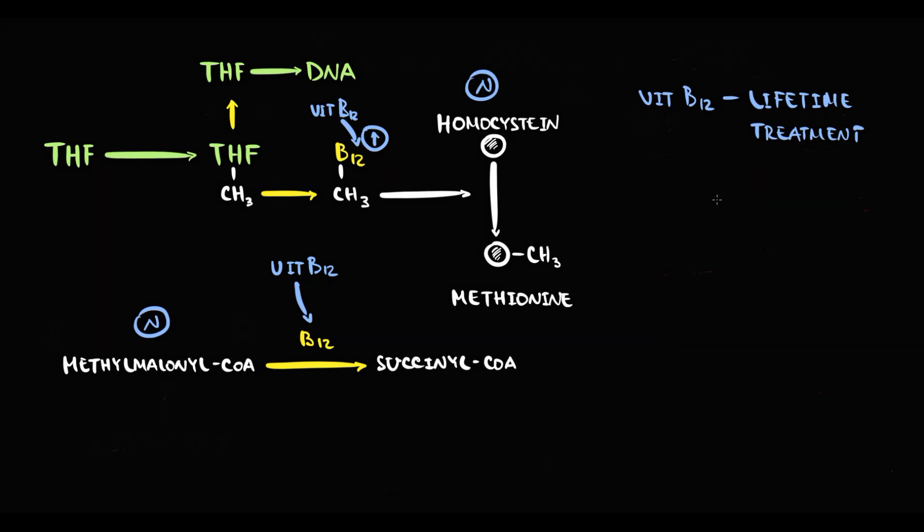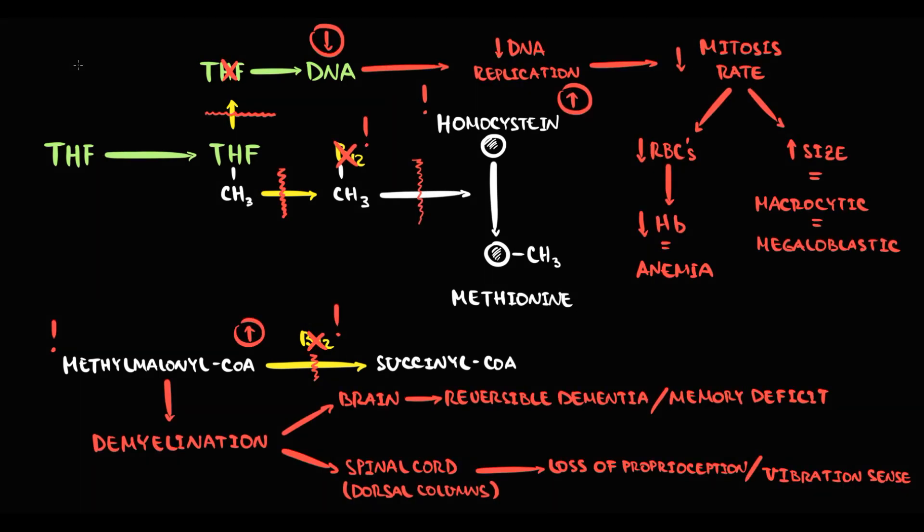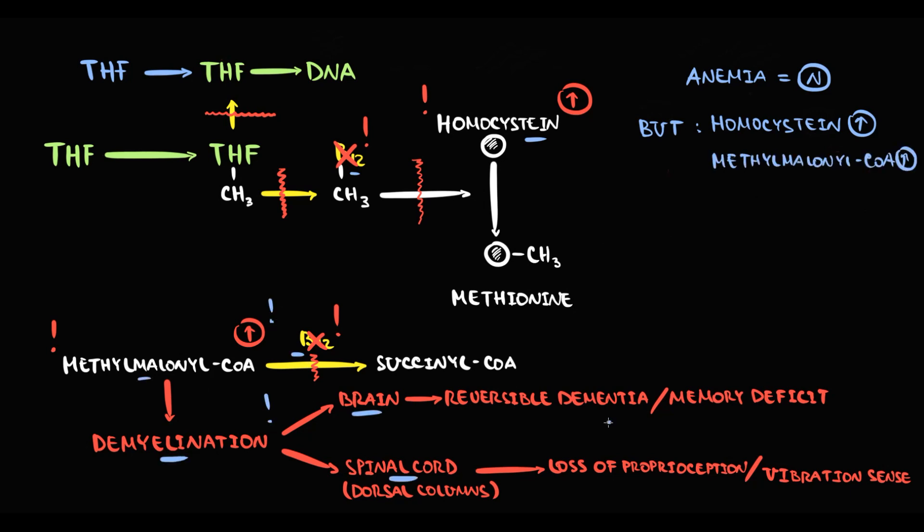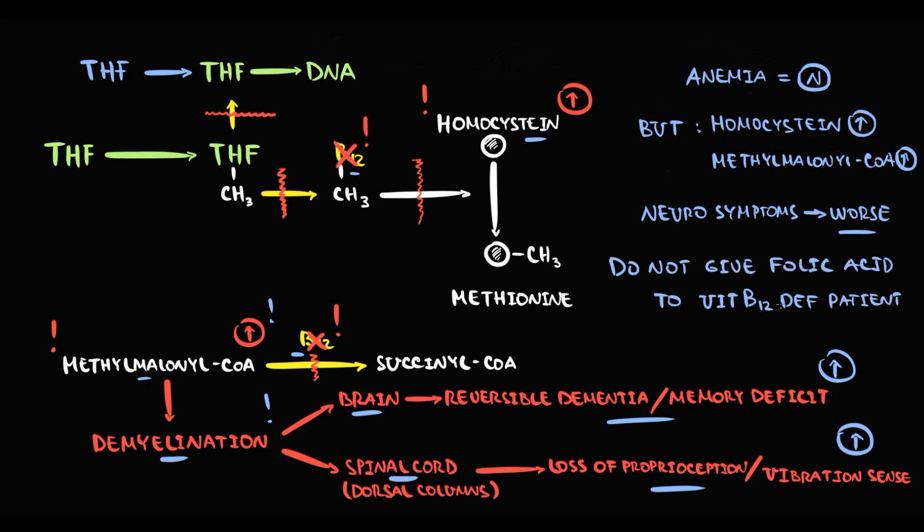But important that in case of vitamin B12 deficiency, we do not give folate acid. Because with intake of folate acid, we can correct DNA production, and thereby we can correct megaloblastic anemia. But everything else requires vitamin B12. So homocysteine and methylmalonyl-CoA will remain high, and which is by far more important, demyelination will progress, so neurological symptoms with time will be even more severe. So do not give folate acid to every patient with macrocytic anemia.